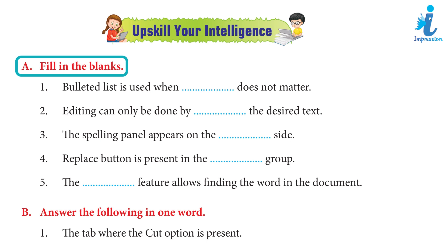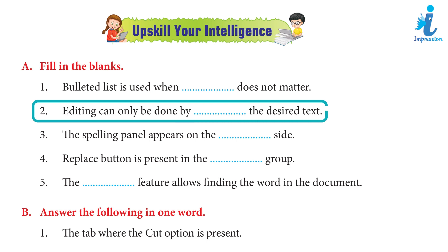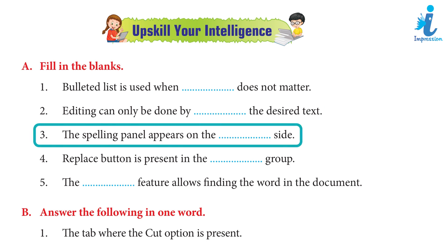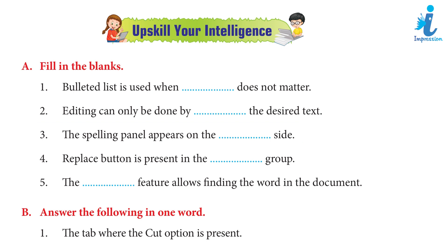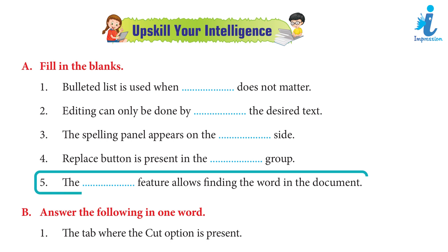Upscale your intelligence. A. Fill in the blanks. 1. Bulleted list is used when ___ does not matter. Answer: Order. 2. Editing can only be done by ___ the desired text. Answer: Selecting. 3. The spelling panel appears on the ___ side. Answer: Right. 4. Replace button is present in the ___ group. Answer: Editing. 5. The ___ feature allows finding the word in the document. Answer: Find.